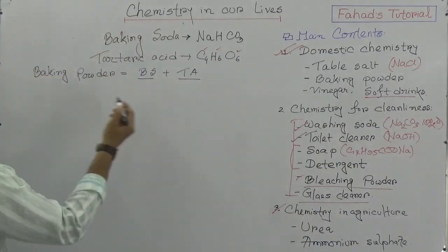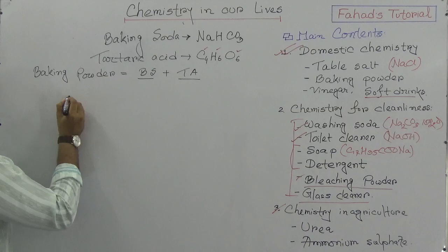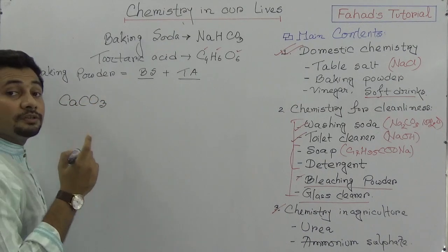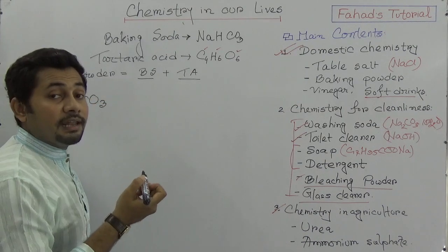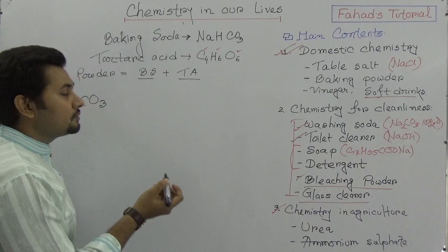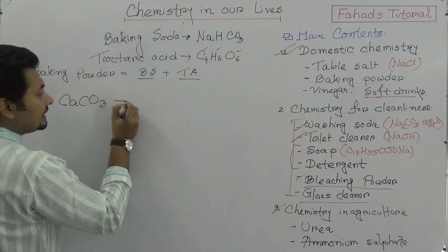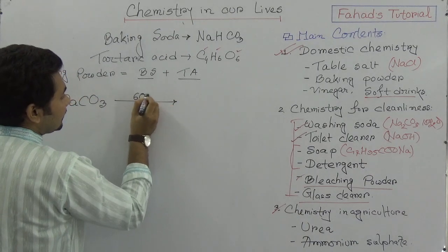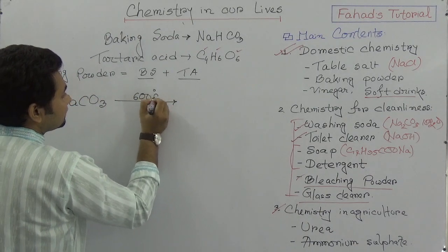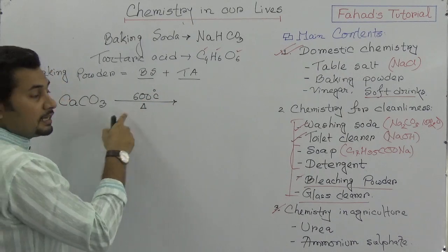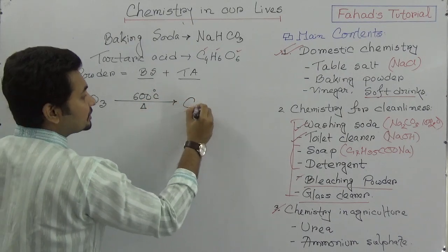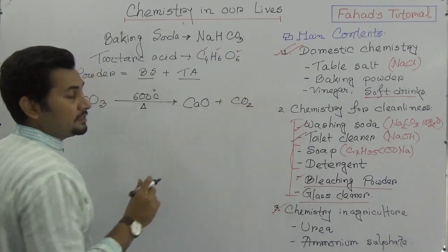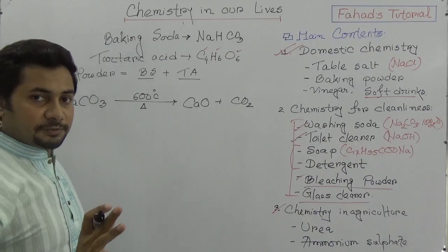Before explaining how baking powder is produced, we need to remember a series of reactions. First, calcium carbonate (limestone) when heated to about 600 degrees Celsius produces calcium oxide and carbon dioxide.